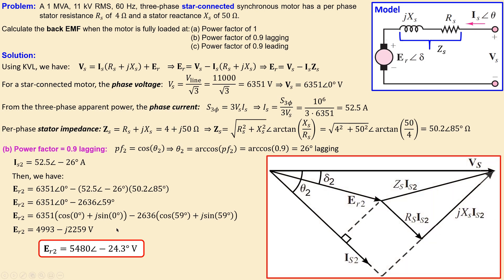In the phasor diagram for this case, the phase voltage is the same value, the phase current is now in a lagging direction at minus 26 degrees, giving a negative phase. The generated back EMF is now smaller than the phase voltage for a lagging power factor, and the associated torque angle is minus 24.3 degrees. The voltage drop across the impedance remains the same at 2636 volts.